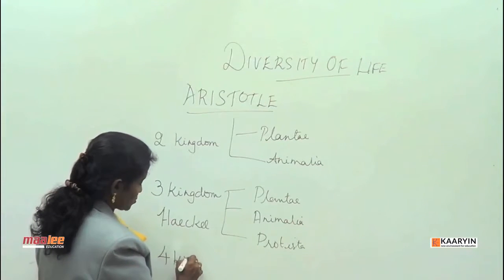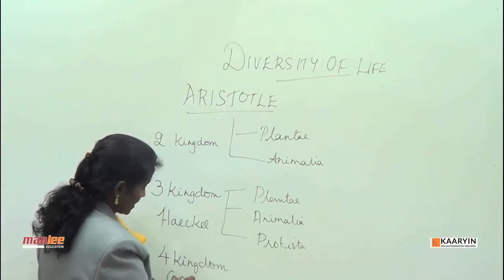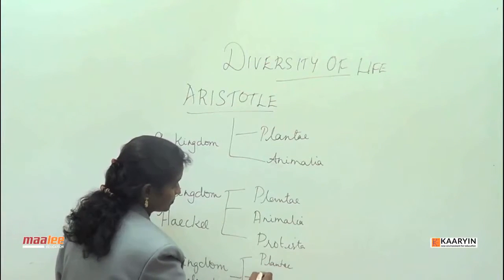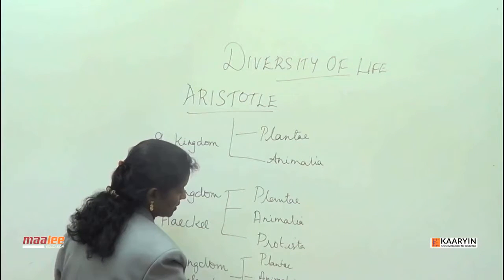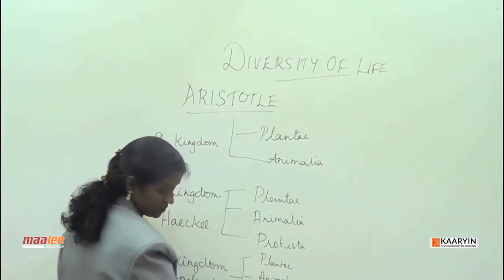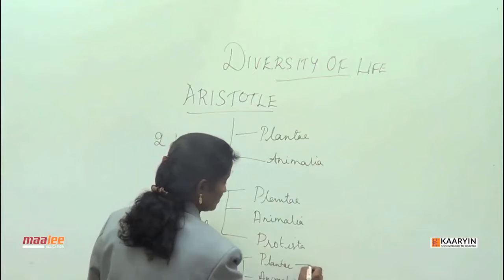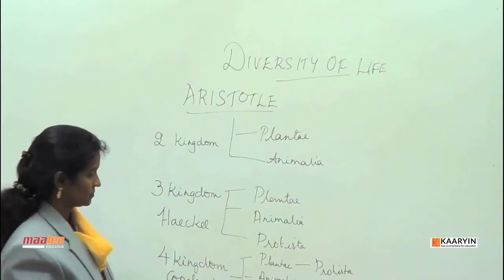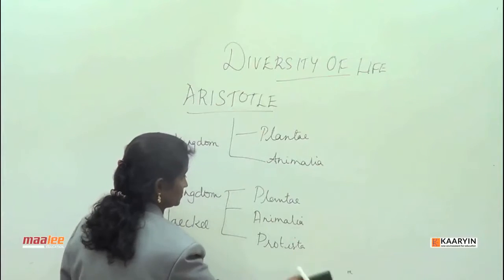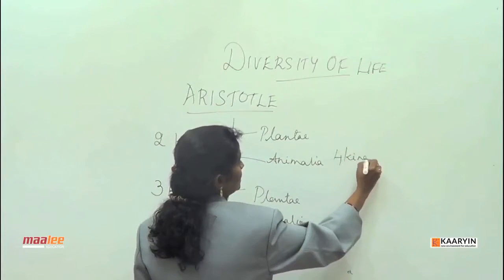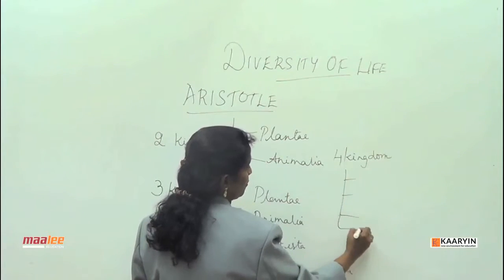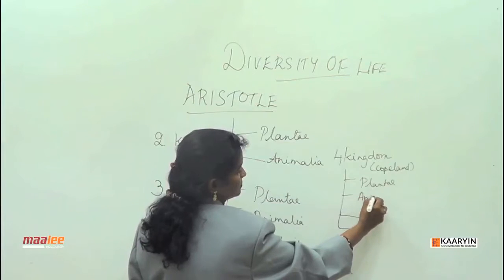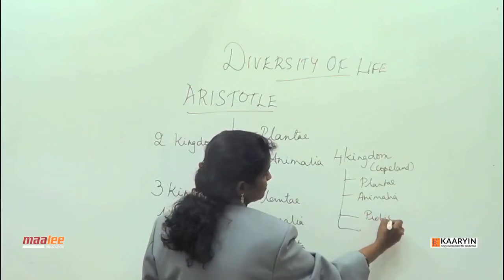Let me take you to the Four Kingdom Concept. This was designed by Copeland, in which he said the world's organisms can be divided into Plantae, Animalia, Protista, and Monera. So Copeland's Four Kingdom Concept divided the world's organisms into these four kingdoms: Plantae, Animalia, Protista, and Monera.